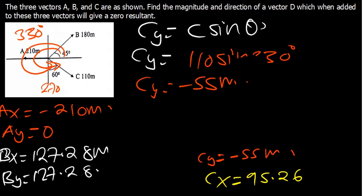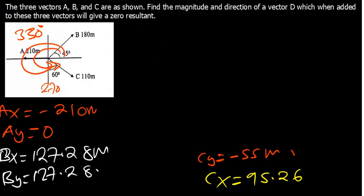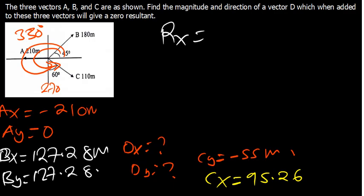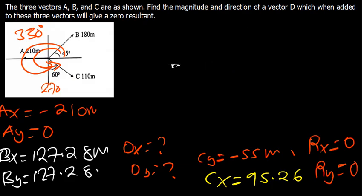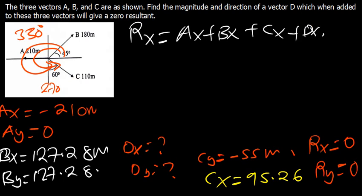For vector D, we don't know DX or DY — those are what we're trying to find. Since the resultant must be zero, both the X and Y components of the resultant are zero. So we can write: RX equals AX plus BX plus CX plus DX equals 0.